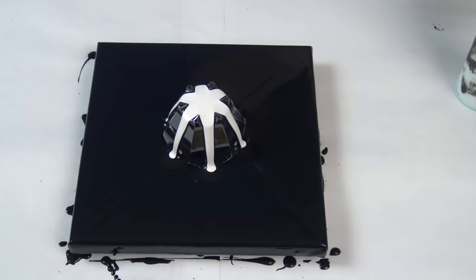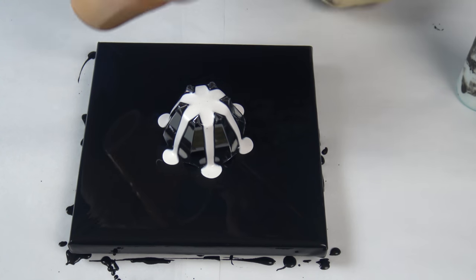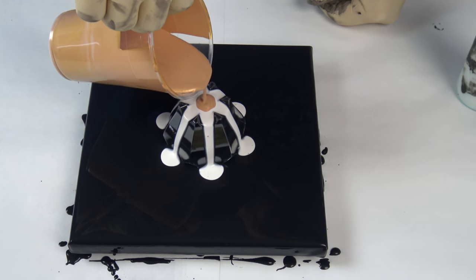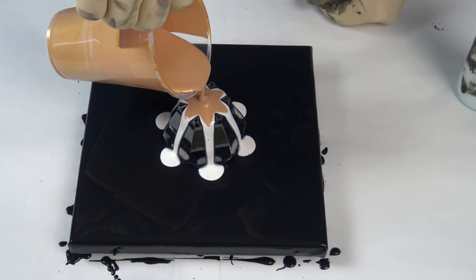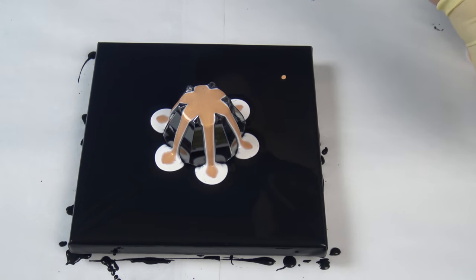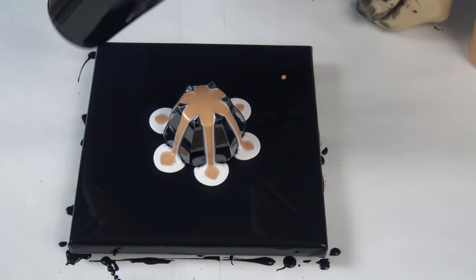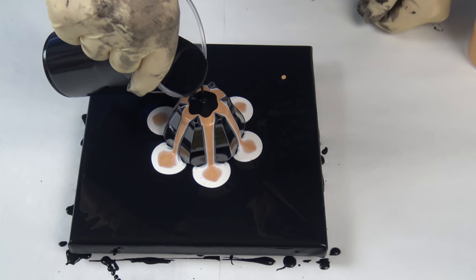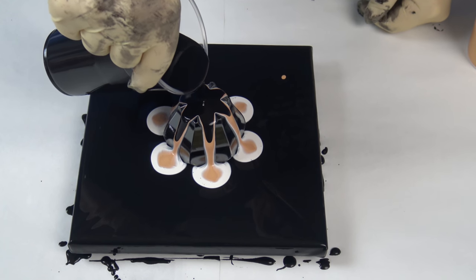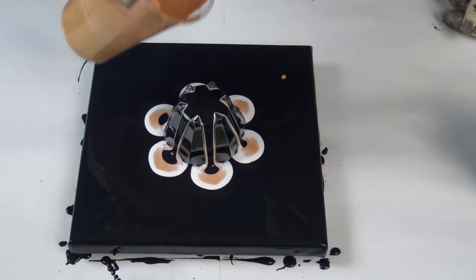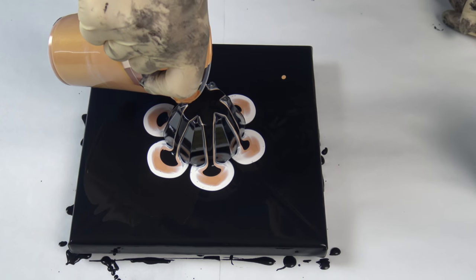So this was pearl white, and gold next. I really don't know how much paint I should pour down at once, so I will add some black again.